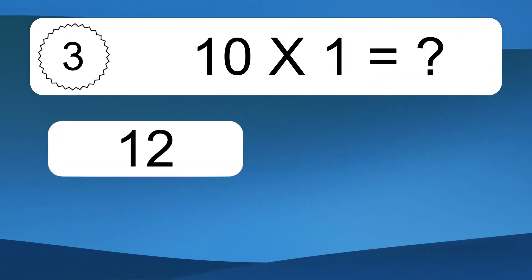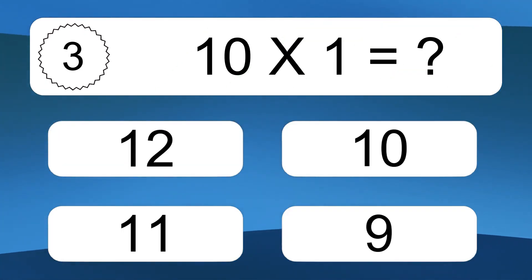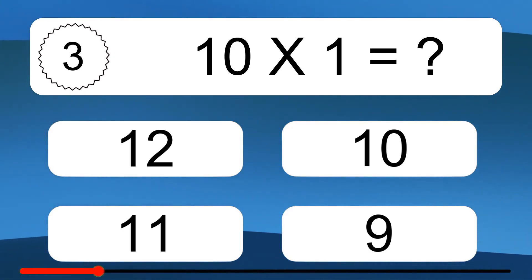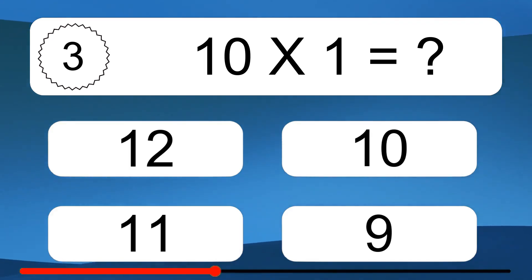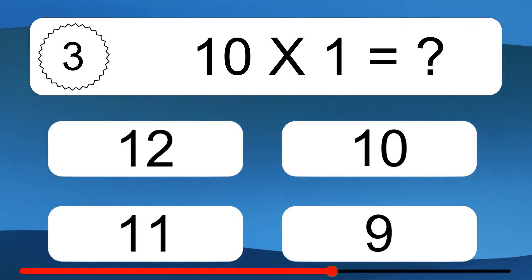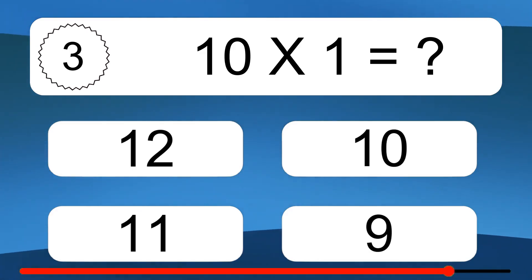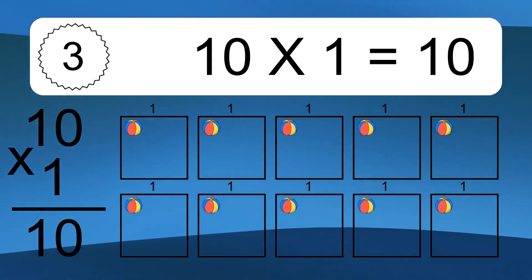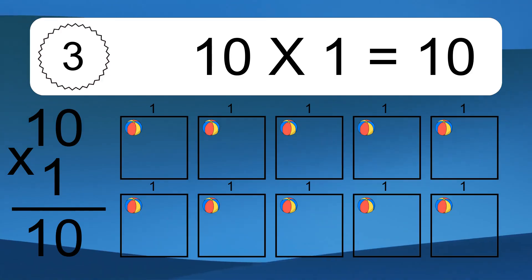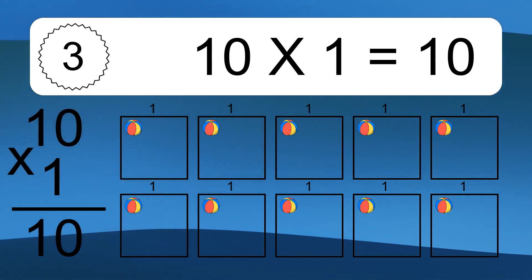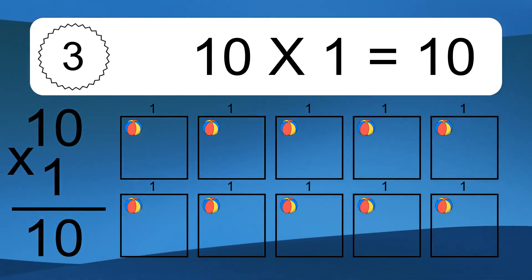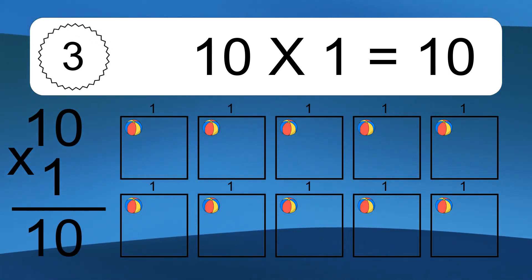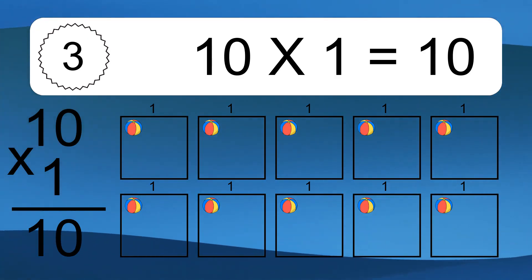10 times 1 equals what? 10 times 1 equals 10. We have 10 boxes, and each box has 1 colorful ball inside. If you count all the balls in all the boxes together, you will have 10 times 1 balls. This equals 10 balls.